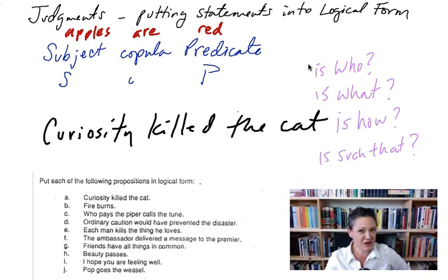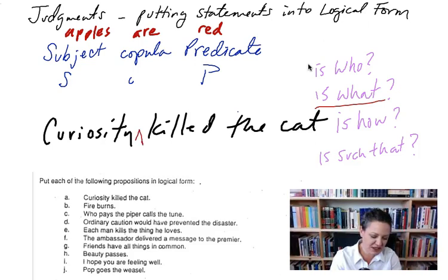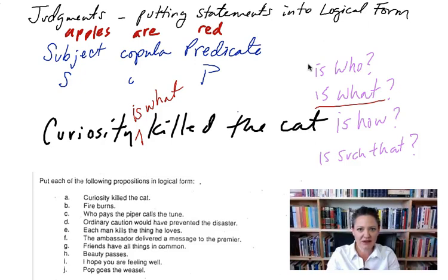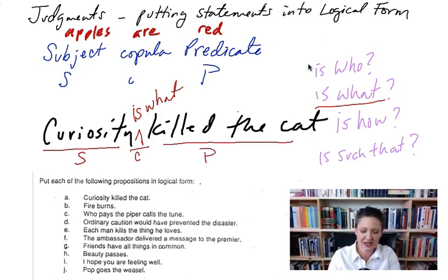But let's do this curiosity killed the cat example here. Curiosity is such that it killed the cat? Maybe. So is such that has to do with the nature of the thing. Curiosity is how killed the cat? I don't think so. Curiosity is who killed the cat? No, it's not a person. How about curiosity is what killed the cat? That seems about right. So let's put that in. Curiosity is what killed the cat.